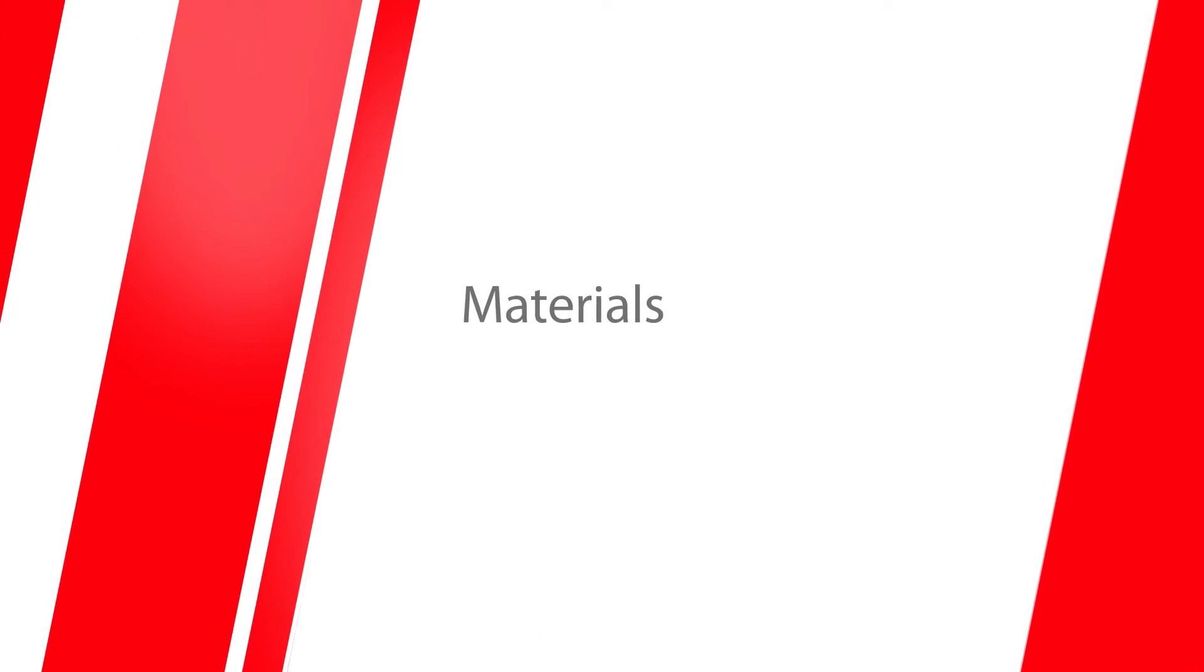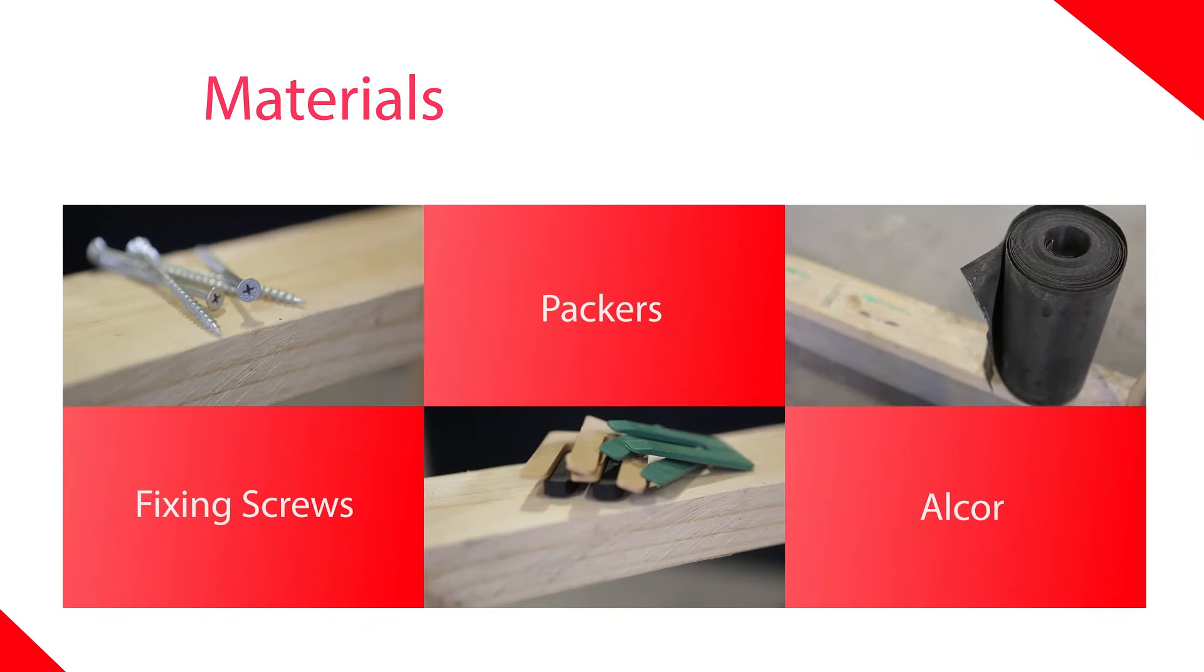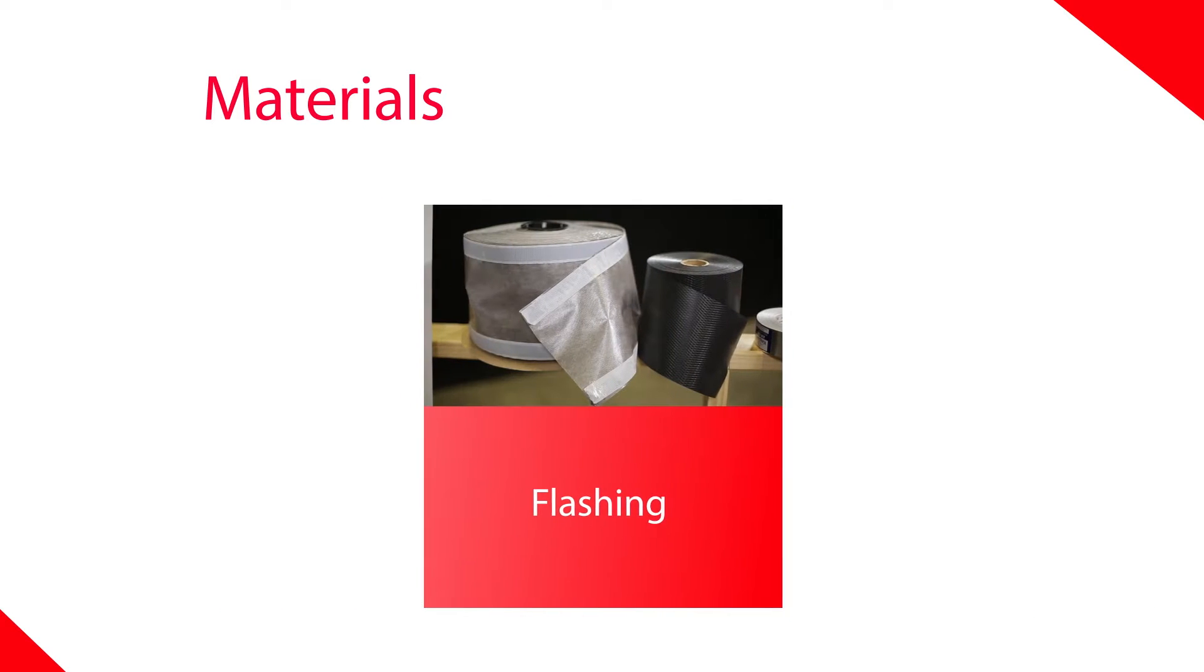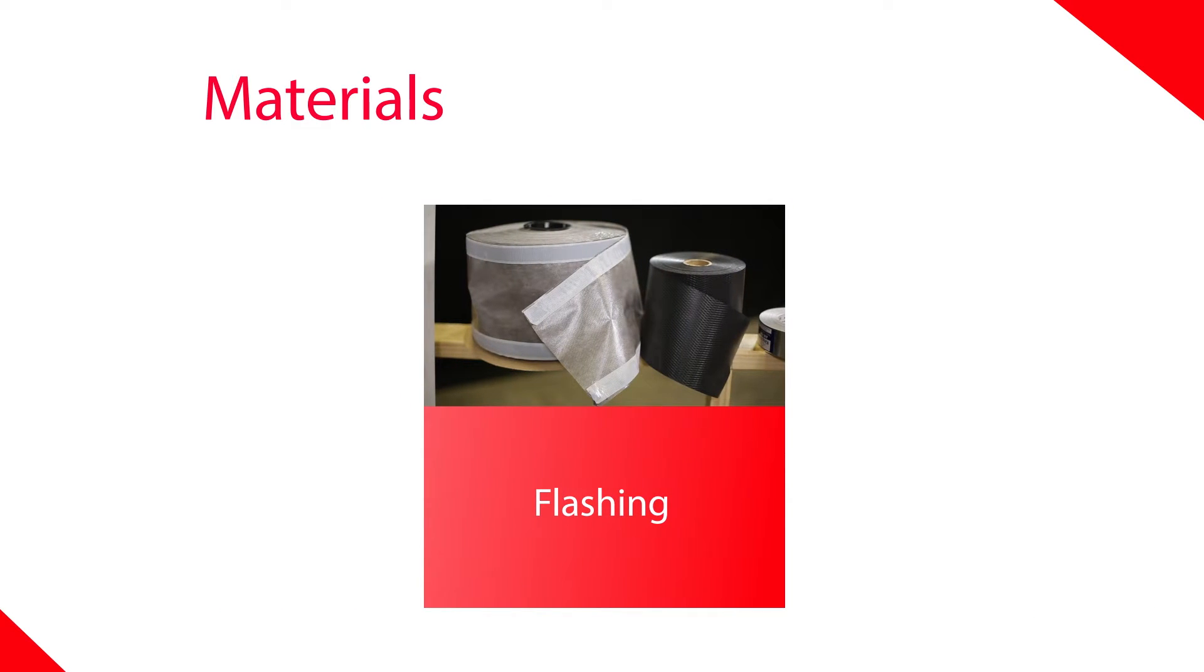There are a few things we'll need. Fixing screws, either stainless steel or galvanized. Packers like the ones shown here or you may prefer to use timber wedges. Alcor for our sealed tray and we'll also need some flashing. There are a number of different types.